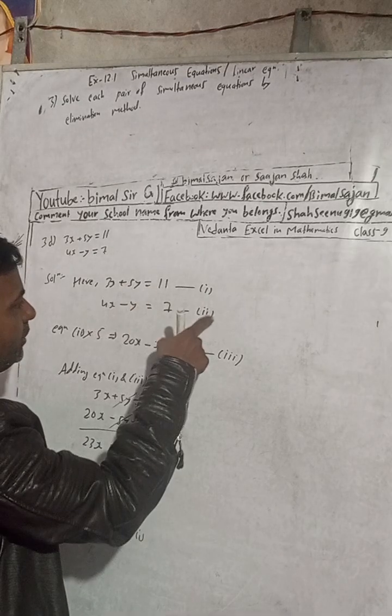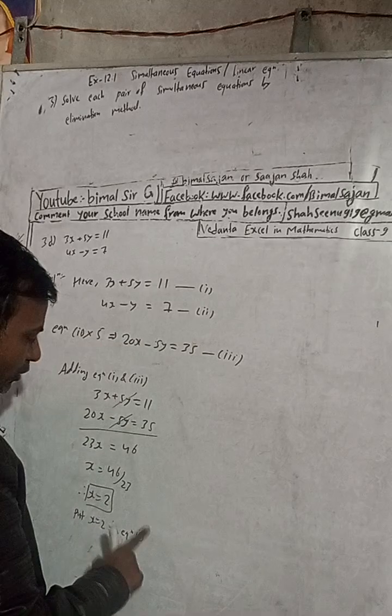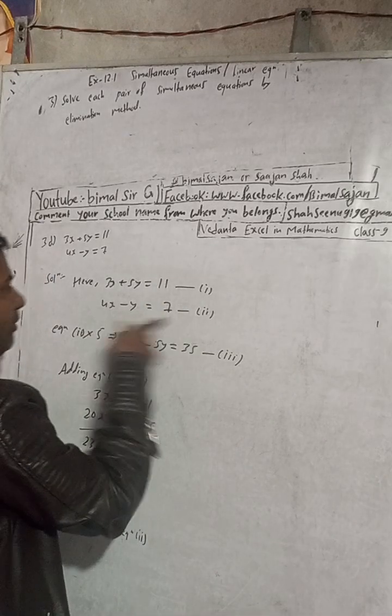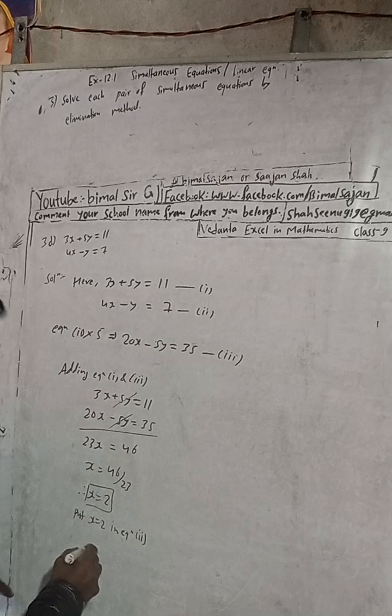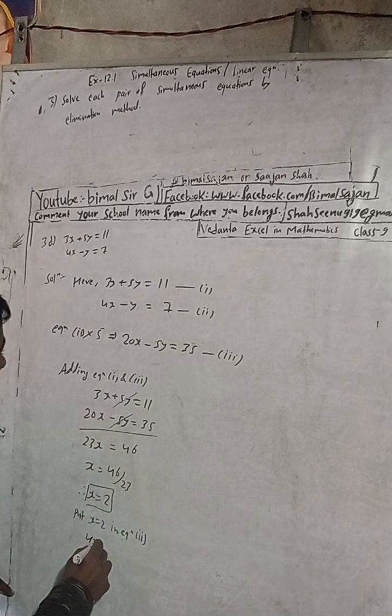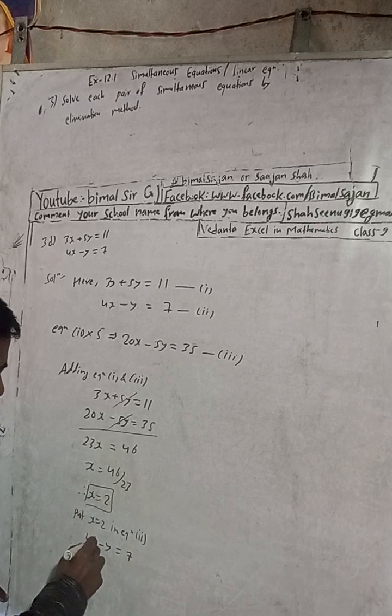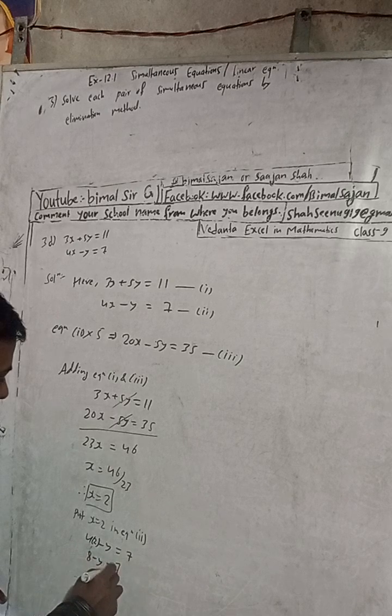Now we can find y. So if you want to find y, we can use equation 2. So 4 into 2 minus y is equal to 7.